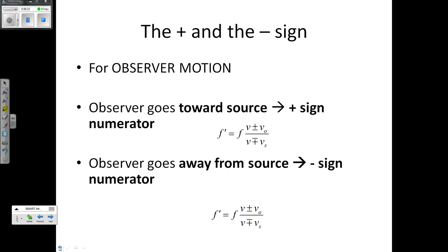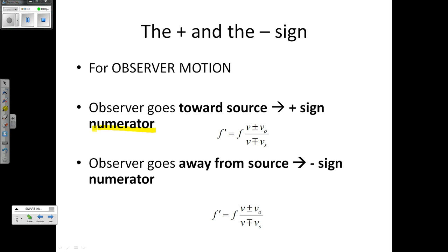However, if the observer is the one in motion, then we deal with the numerator. So if you are the person listening — say you're in a car driving towards a parked ambulance making a noise — if you are moving towards an object making a noise, we choose a positive in the numerator. If you are moving away from the source, we pick a negative in the numerator instead.